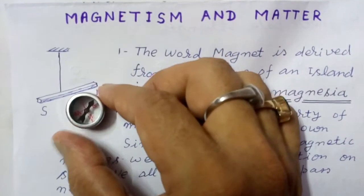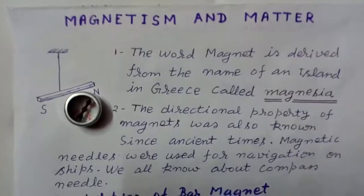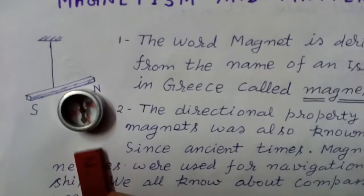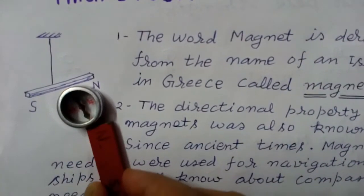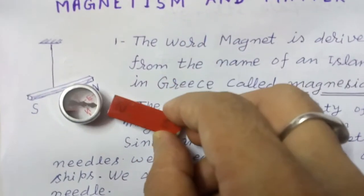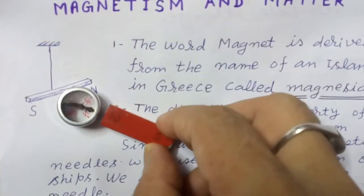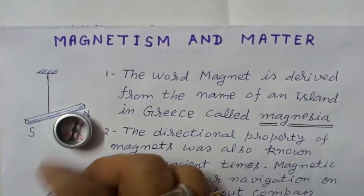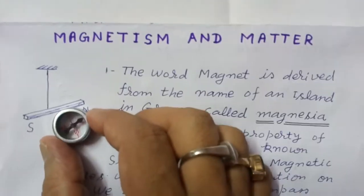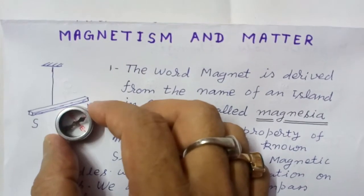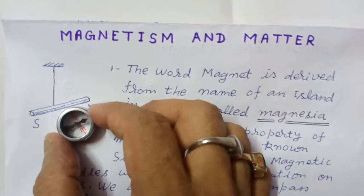Now suppose I bring a small bar magnet near it — it deflects, like this. But a freely suspended small bar magnet orients itself in the north-south direction, because earth also behaves as a magnet.